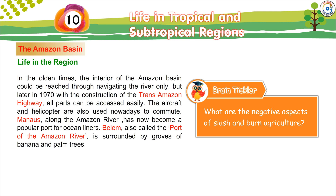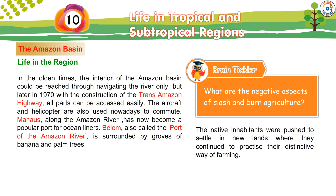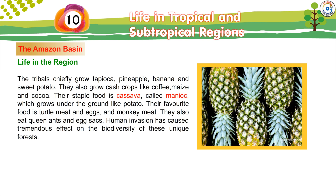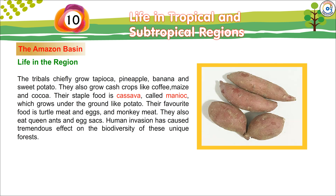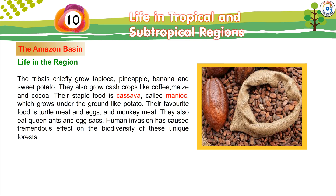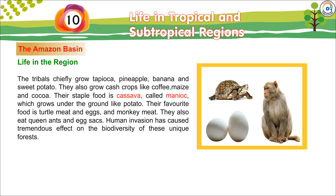The native inhabitants were pushed to settle in new lands, where they continued to practice their distinctive way of farming. The tribals chiefly grow tapioca, pineapple, banana, and sweet potato. They also grow cash crops like coffee, maize, and coca. Their staple food is cassava, called manioc, which grows underground like a potato. Their favorite food is turtle meat and eggs and monkey meat. They also eat queen ants and egg sacks.